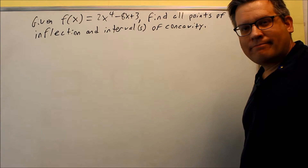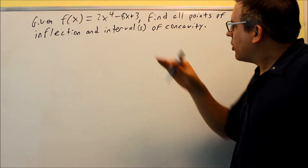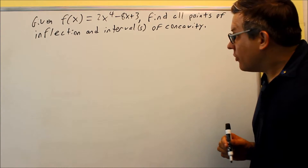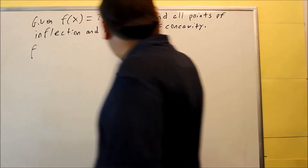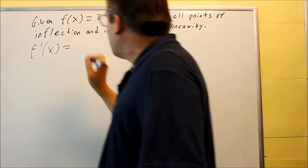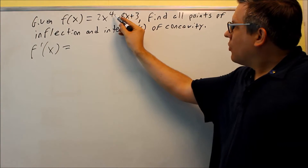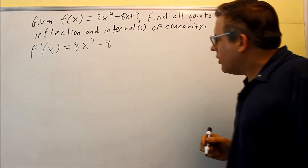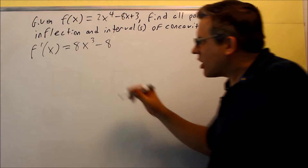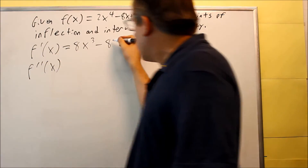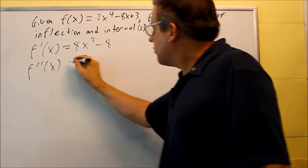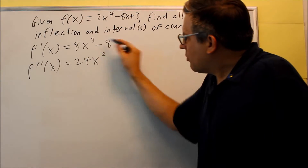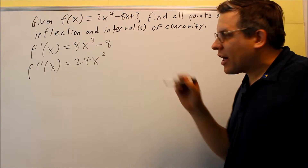Now let's look at another example. We have a function and we want to find all the points of inflection and intervals of concavity. The first thing I always want to find is the second derivative. This one I don't need to rearrange at all — I'll take the derivative directly using the power rule: 4 times 2 gives 8x to the third, minus 8, and the derivative of the constant 3 is 0. That's the first derivative. Now for the second derivative: 3 comes down giving 24x squared, and the derivative of negative 8 is 0. This is a polynomial so it's always defined — no inflection points from undefined values.